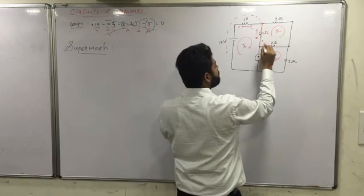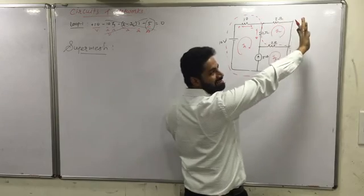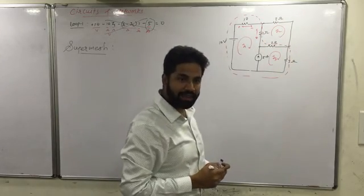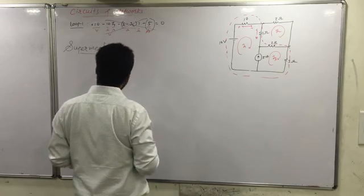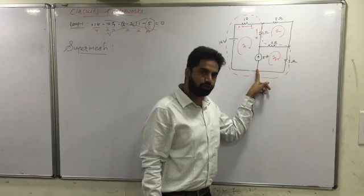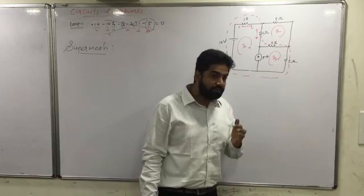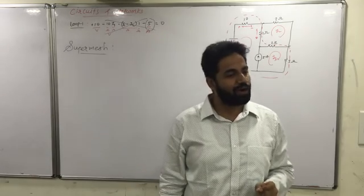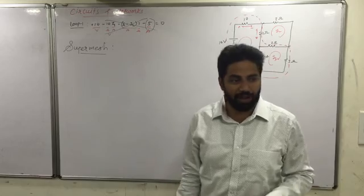So this is our supermesh — this is our supermesh, this is a normal mesh, but this is a supermesh. To clearly identify: if in between any two loops we have a current source, then it becomes a supermesh. And obviously, if it is a supermesh, the treatment we will give it will be special — it will not be the conventional one.